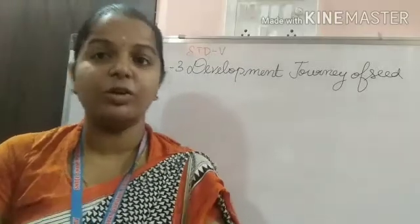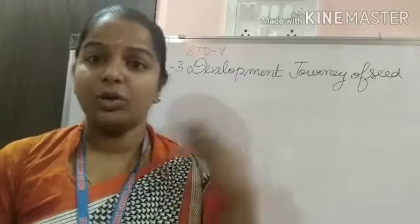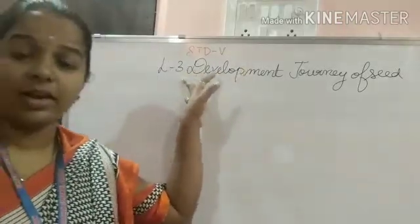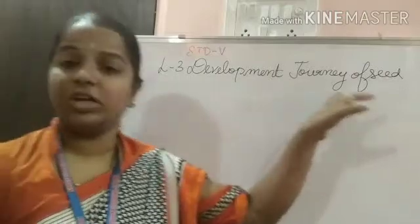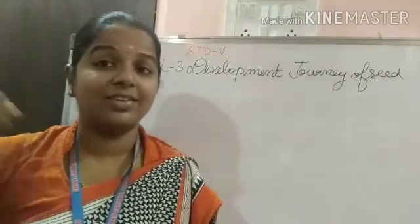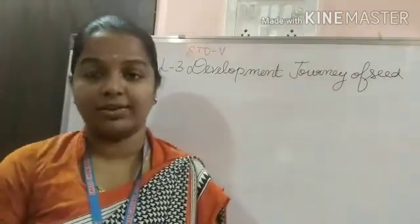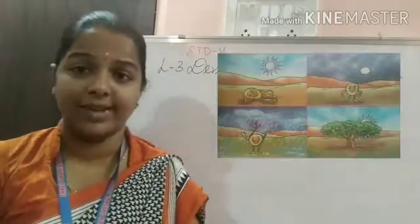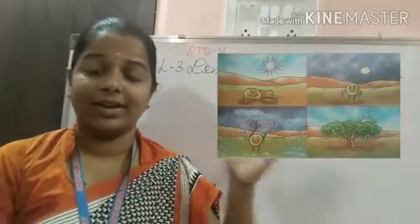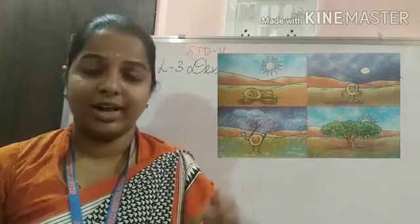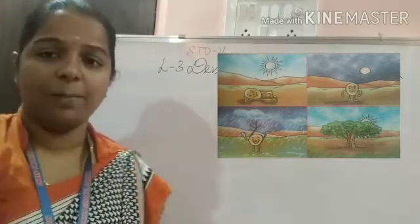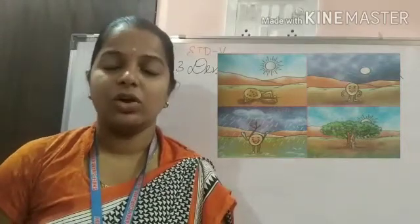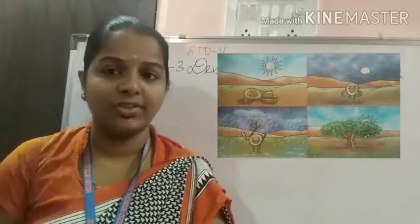Hello students, hope you are all doing good. Today we are going to learn a new chapter — Lesson Number Three: Developmental Journey of a Seed — how the seed is developed into a plant. Here is your first picture: you can see one seed laying down and at last one grain is standing up and growing into a new tree. This is a process of a seed.